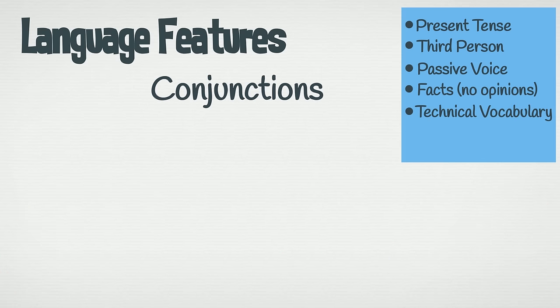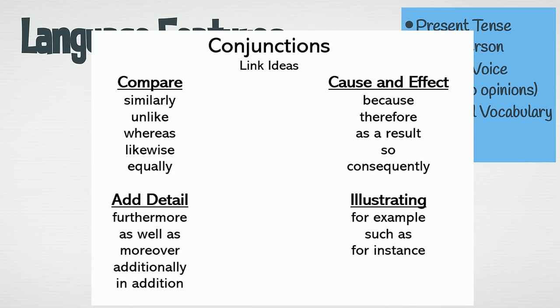Conjunctions. Conjunctions are important to use in information reports because they link together information and ideas. Here is a list of conjunctions grouped by their purpose. We can see that some compare, some add details, others show cause and effect, and others are used to illustrate a point.